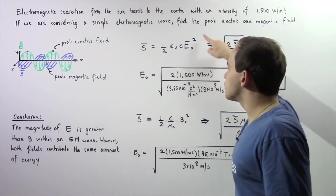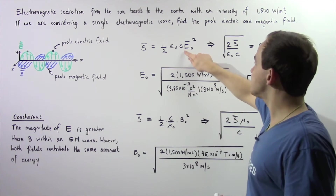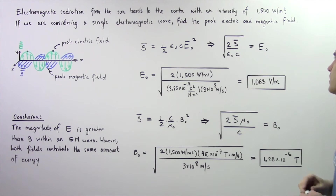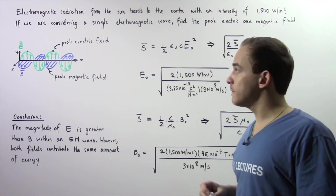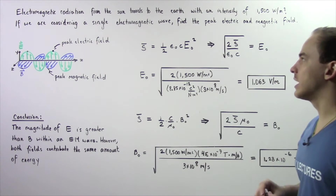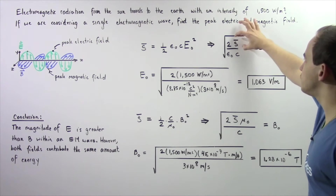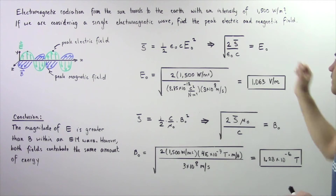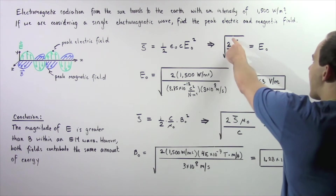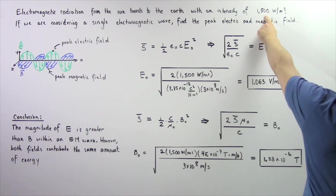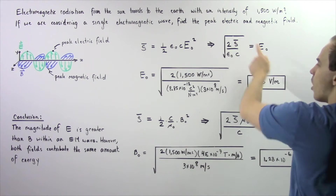If we take this equation and solve for our peak electric field E naught, we get the following result: the peak electric field is equal to the square root of 2 multiplied by the intensity divided by epsilon naught multiplied by c. We know our intensity is 1,500 watts per meter squared, so we plug that in for S bar.